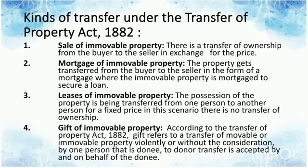Types of Transfers under the Transfer of Property Act: There are four types of transfers. First, sale of immovable property — there is a transfer of ownership from the seller to the buyer in exchange for a price, and delivery of tangible property from the seller to the buyer. Second, mortgage of immovable property — the property is transferred in the form of a mortgage only for security of a loan. The mortgagor has to pay the principal loan along with the interest to release the immovable property from the mortgage.